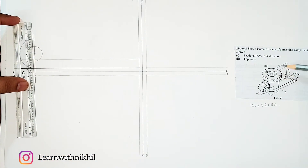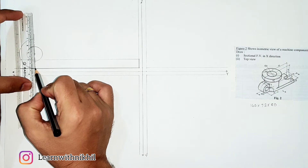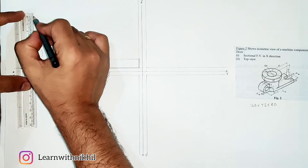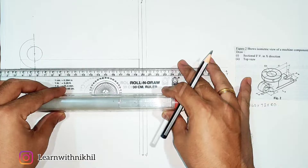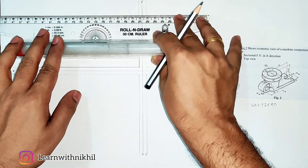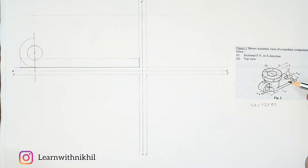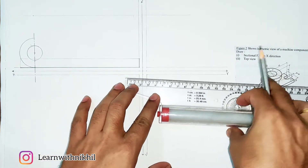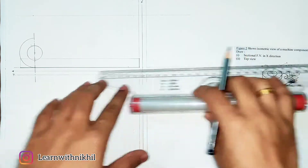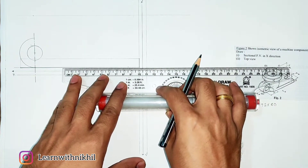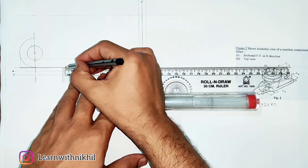Now the total height of the figure is 60 plus 12, that is 72. So from here I will mark a point 72 millimeters above and we will draw a parallel line through that point. Next, this distance — the center point of the other semicircle — is 15 millimeters from this end, so marking a point 15 millimeters here. Then till the center we have the remaining distance of 85 millimeters till the center of the bigger circle.